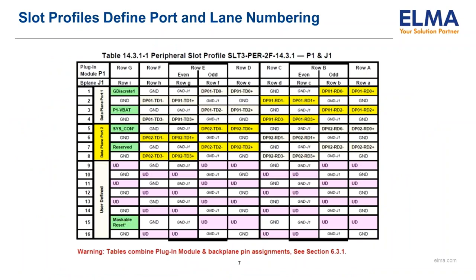Within a VITA 65 SLT profile section, following the colorful SLT image and related list of rules and permissions, two or more tables which name each signal position within each connector comprising the SLT profile are shown. Each signal name identifies the plane and port which that signal position is part of. TX and RX signals are also identified. For instance, DP01-TD is a data plane signal. An important aspect of these SLT profile tables are the column names given in the top two horizontal rows.